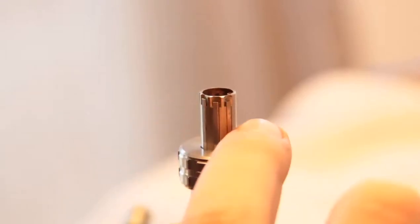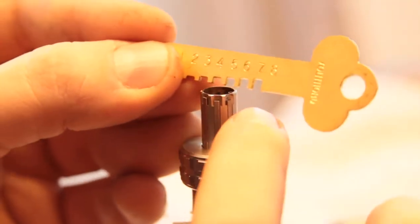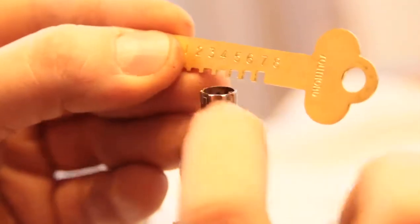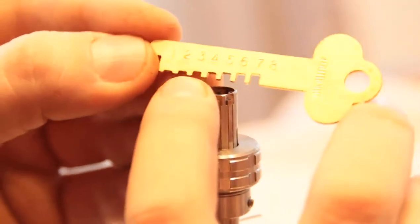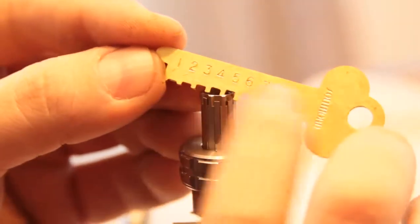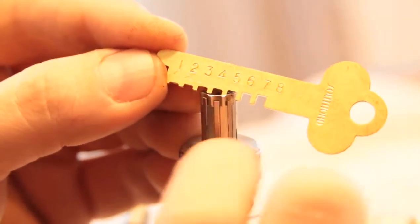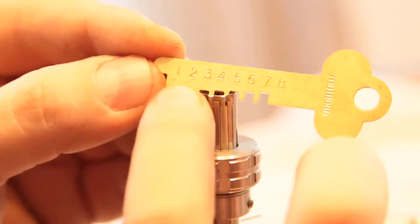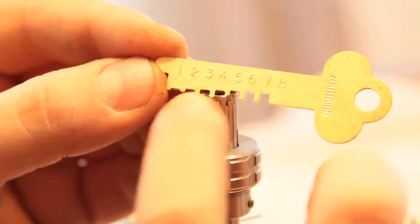Once you have the code for the lock, you should be able to go to a locksmith and have them cut it by code, or you can get a little machine, a couple different kinds of machines that will cut it for you.